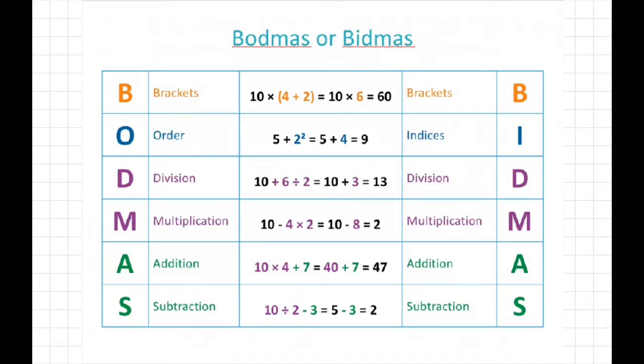So with BIDMAS or BODMAS, you start by looking for brackets in your calculation. If there are any brackets in there, you do what's inside the brackets first. You then look for orders or indices. Now, orders or indices are the little number that goes above a number, sometimes a 2 or a 3, and this means the number needs to be squared or cubed. So we do that next.